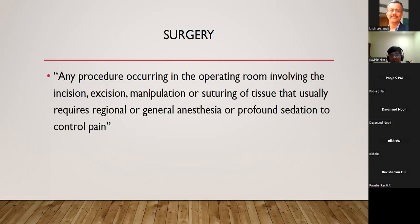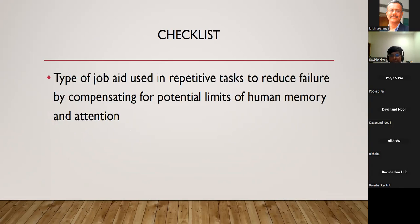First, I will break down the title of the seminar. What can be considered as surgery? Any procedure occurring in the operating room involving incision, excision, manipulation or suturing of tissue that usually requires regional or general anesthesia or profound sedation to control pain. A checklist is a job aid used in repetitive tasks to reduce the failure rate — not because we do a task to fail, but to erase human error. Our memory and attention are very limited, so we need an aid to compensate.